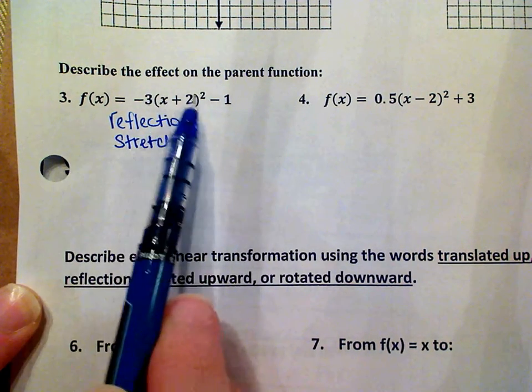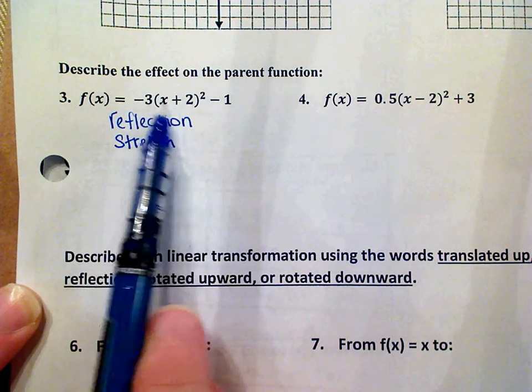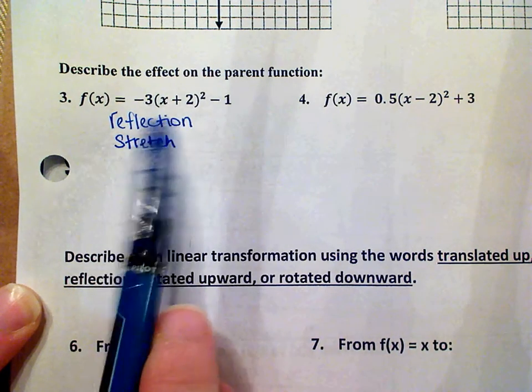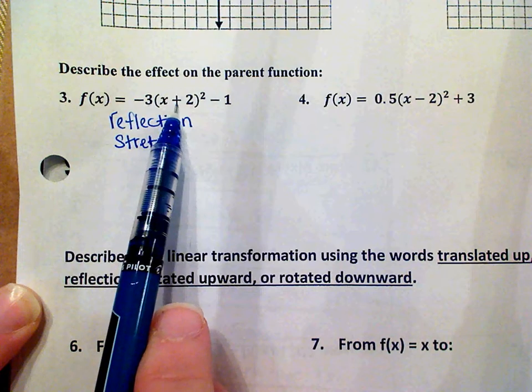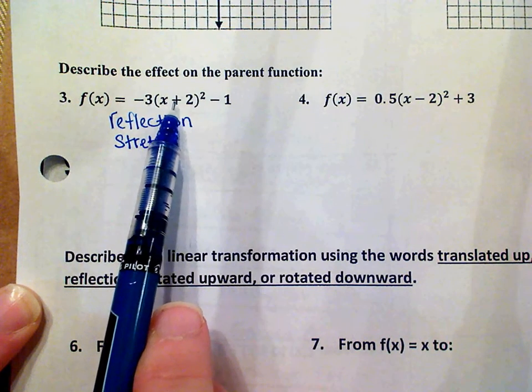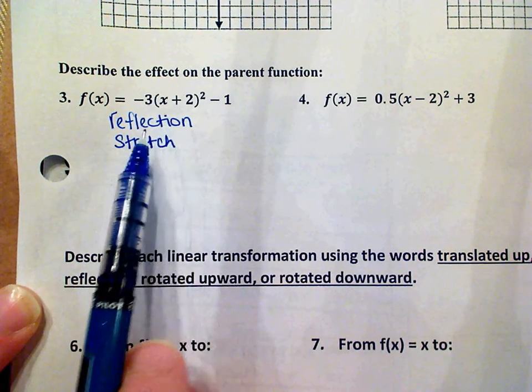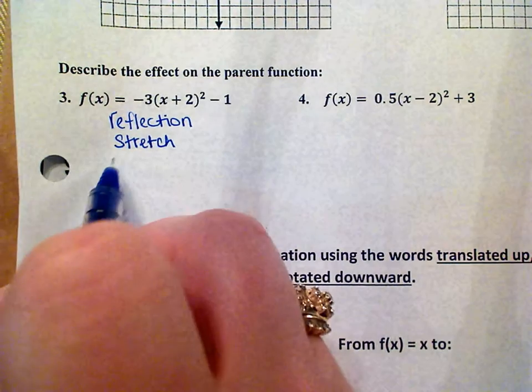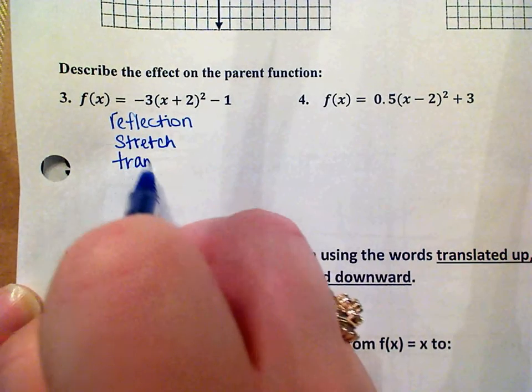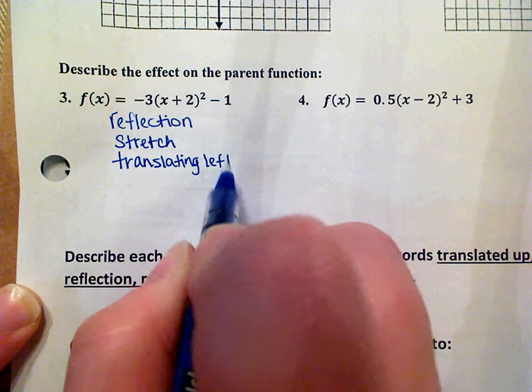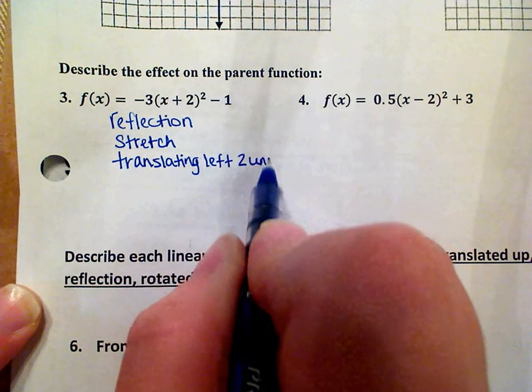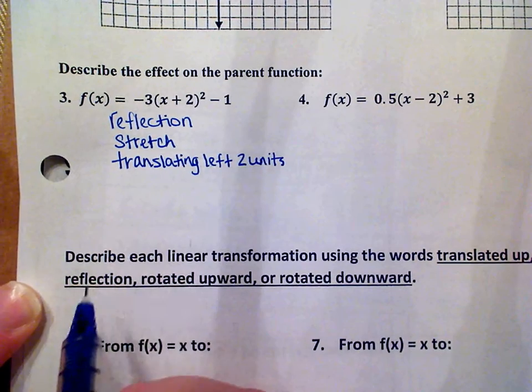The next thing I'm going to do is look in the parentheses. The parentheses tells me the translation left to right and so we do have a translation here. Remember the sign does not tell the truth about the direction though, so you might think that's translating to the right but it's actually a translation to the left. So we're translating left two units. If you don't have a number in the parentheses then you did not have a left to right translation.